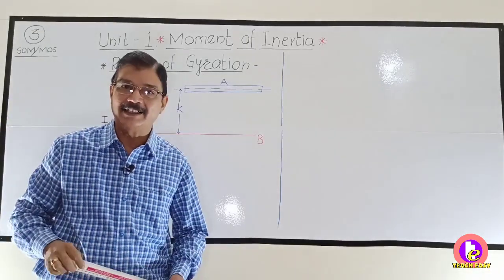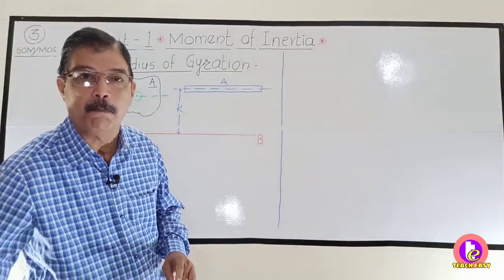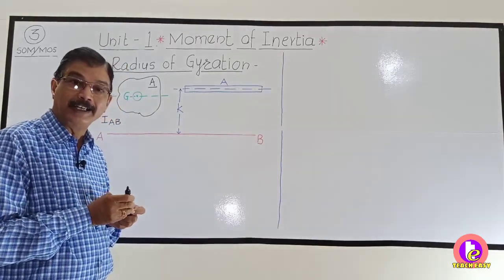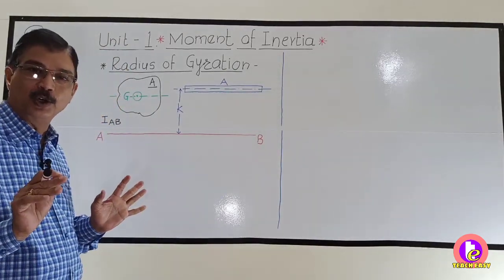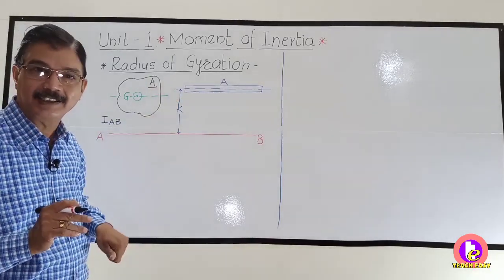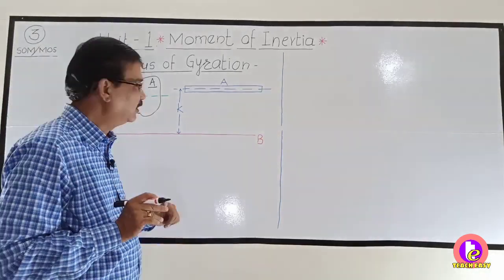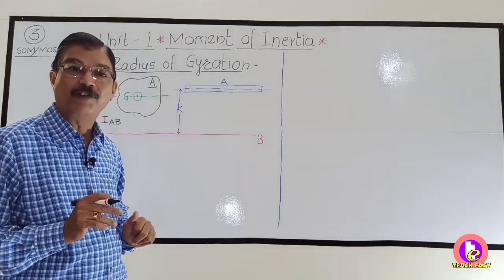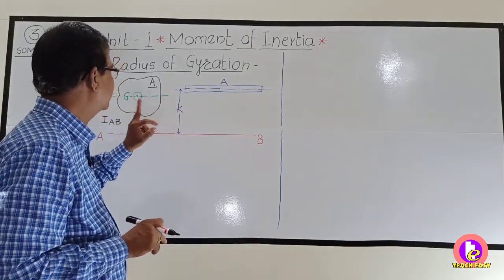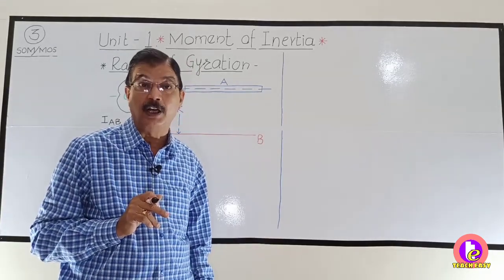As it is a radius, its unit is centimeter, mm, meter, etc. It is generally denoted by small r or small k. Radius of gyration is the distance between the two axes such that if the area is squeezed and arranged along a particular axis without changing the moment of inertia, then the distance between these two axes is known as the radius of gyration. You can refer the books and write that particular definition.